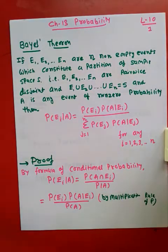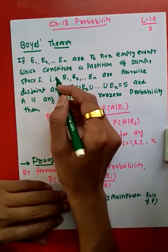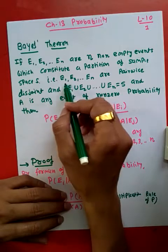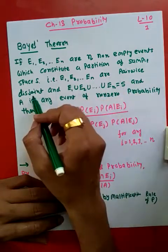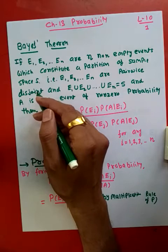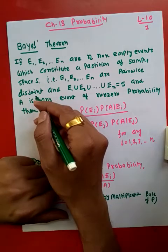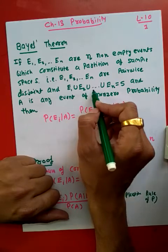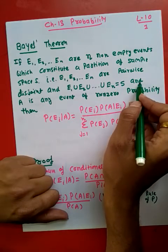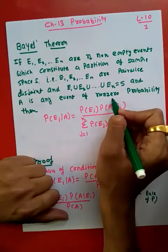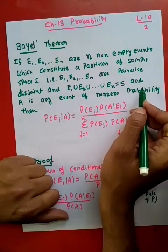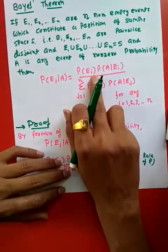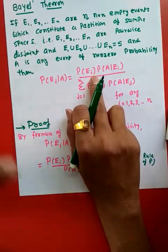It is non-empty, it has certain members which constitute a partition of sample space. E1, E2, ..., En are pairwise disjoint — यह सब conditions हमने lecture number 9 में discuss की हैं. And E1 union E2 union ... En equals S, and A is any event with non-zero probability.